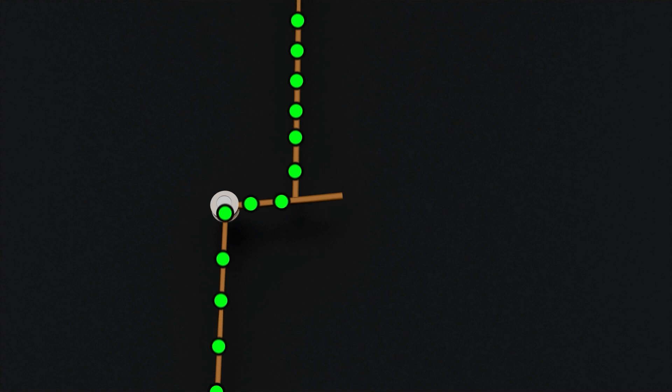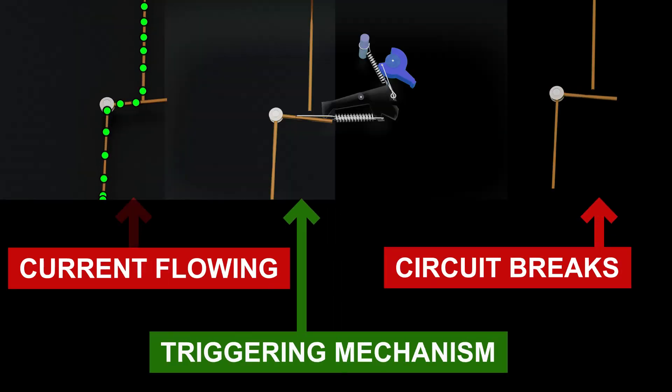An automatic on-off switch mechanism is used to solve this problem. In normal condition, current flows through it, but when fault current flows in the circuit, the circuit breaks automatically. To turn this circuit on and off automatically, a triggering mechanism is used.